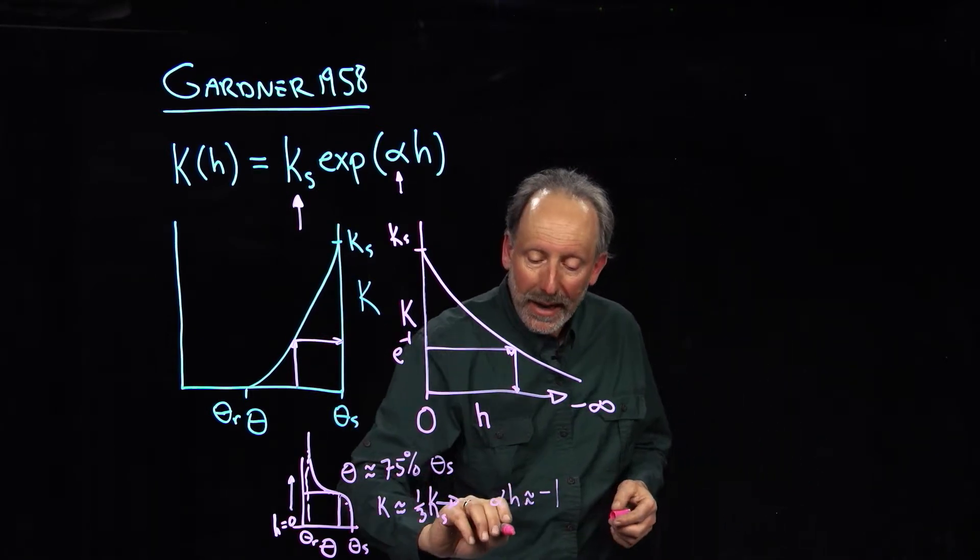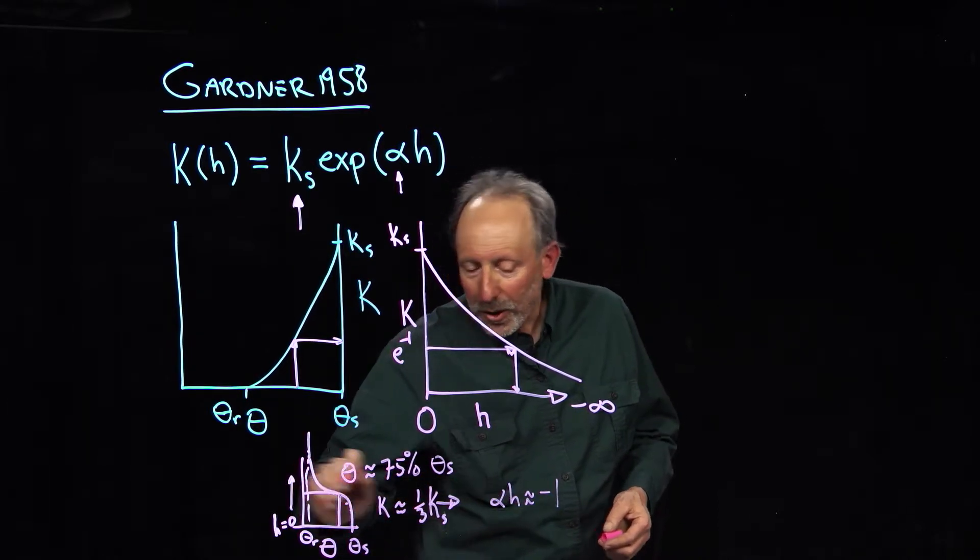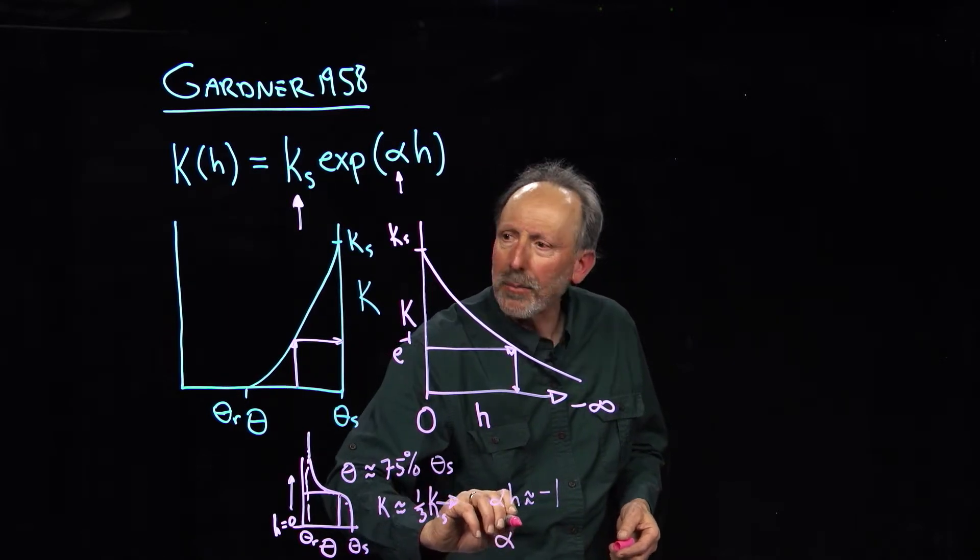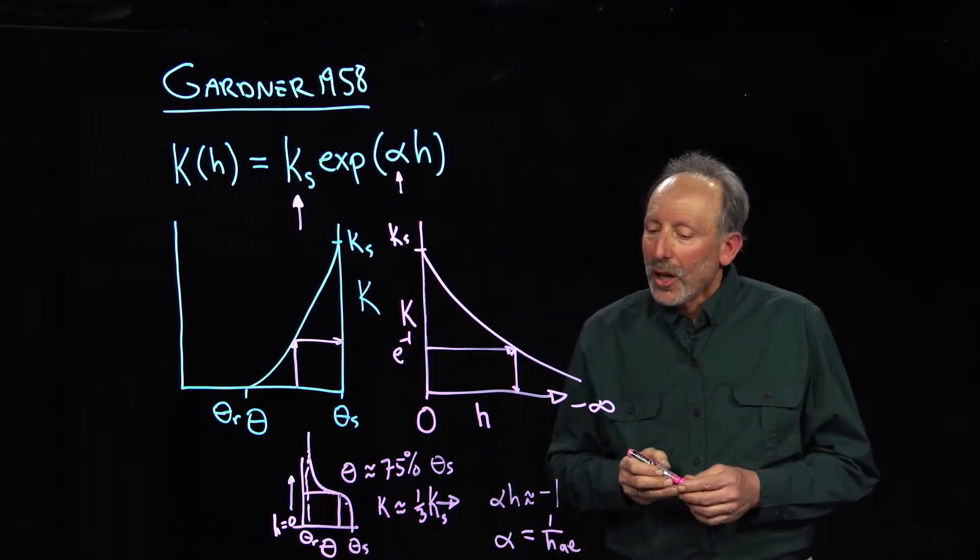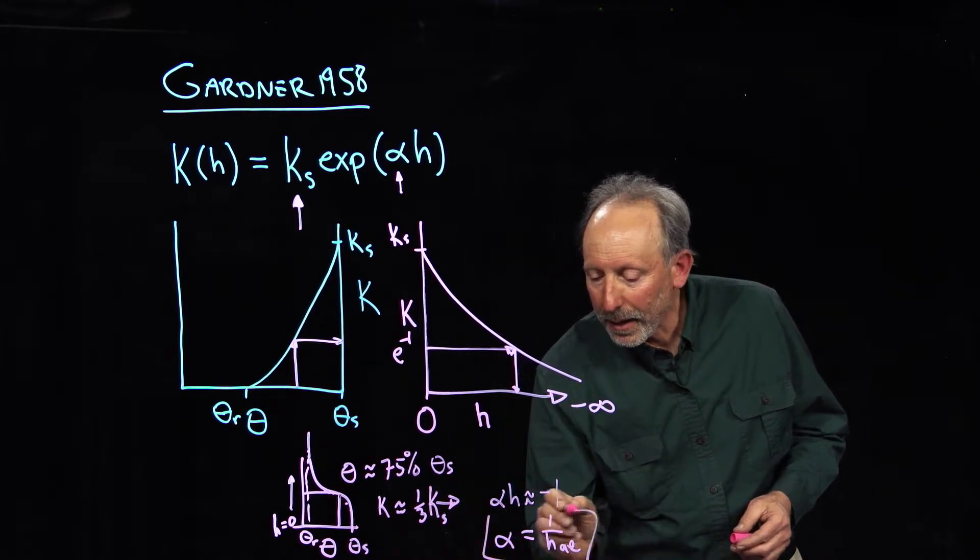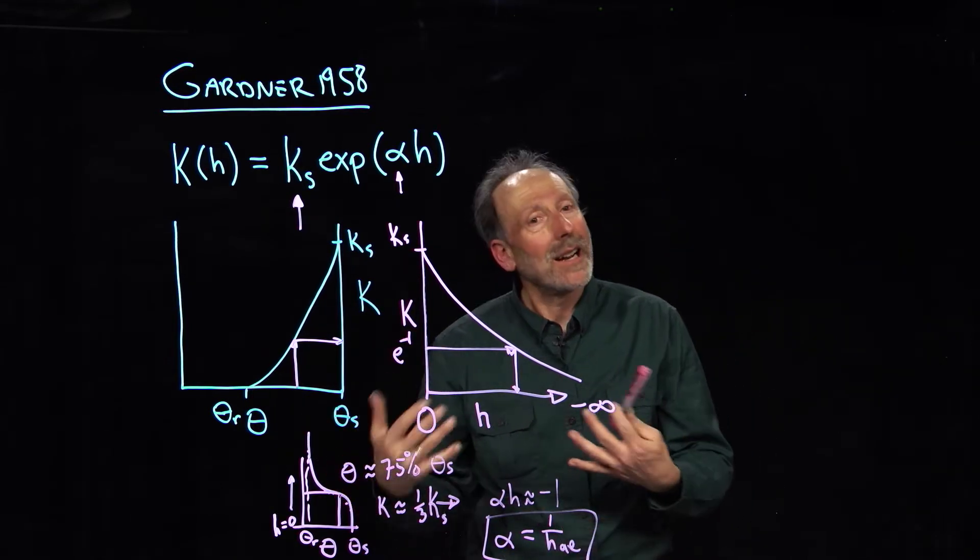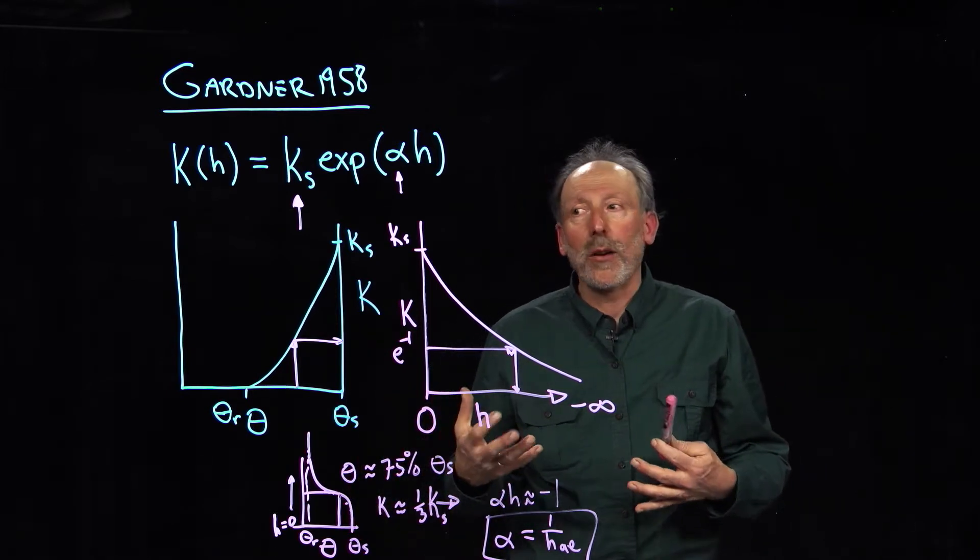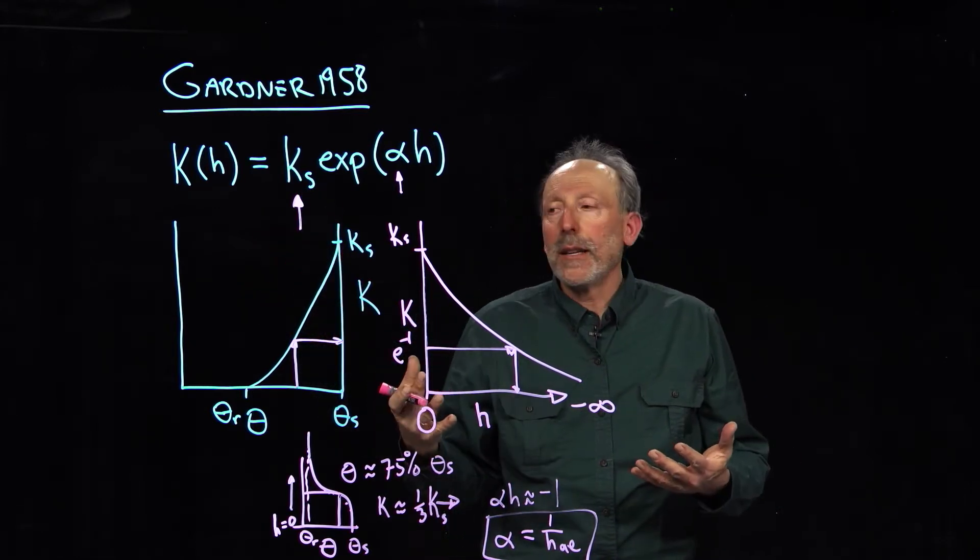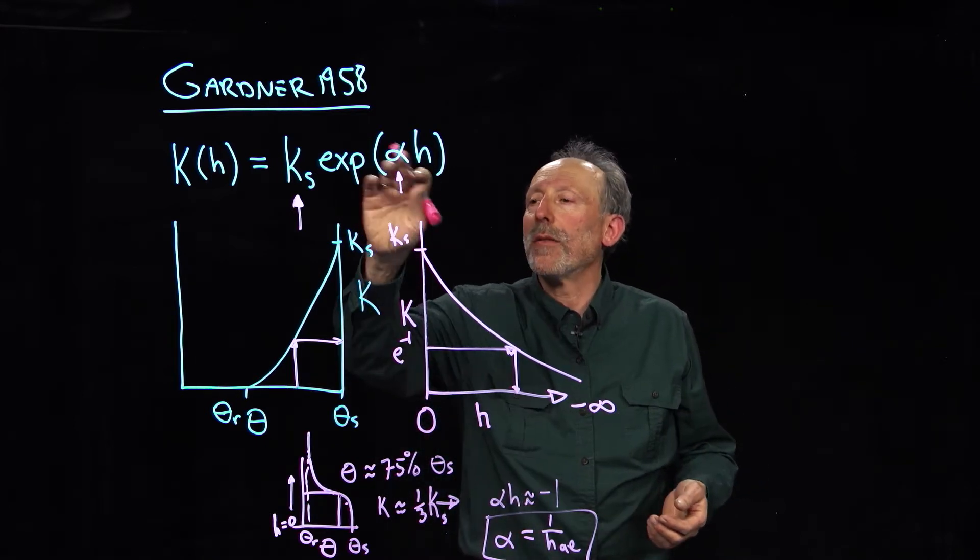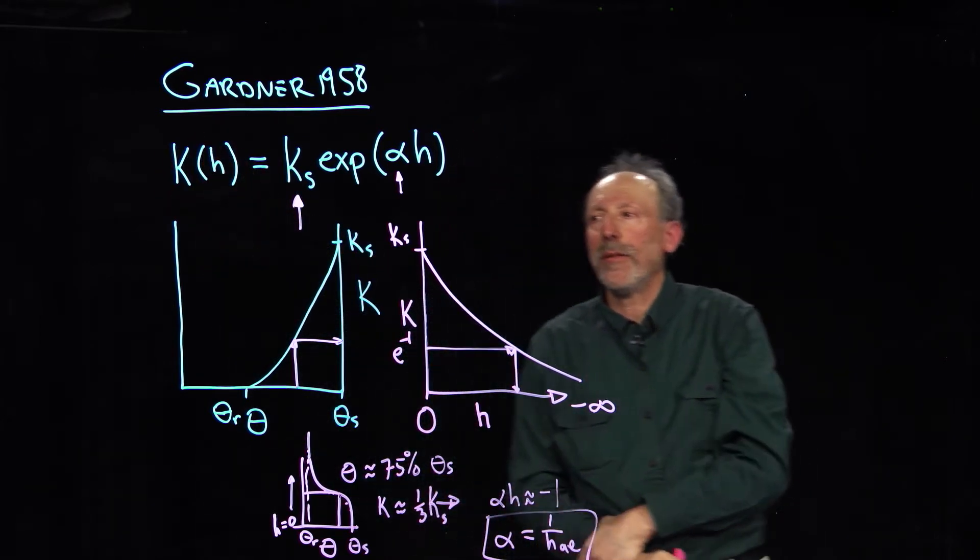So then we can say that alpha, we'll call that h, we'll just call that the air entry. So that's when the air starts to really enter the soil. So alpha is approximately equal to one over the air entry pressure. So now we can relate the value of the parameter alpha to a point off of the retention curve. And that's kind of satisfying, because we know that the retention curve really tells us a lot about when the conductivity should decrease. And so we're going to do a column experiment, as we did with the Van Genuchten expression, and we'll take this point, this value of alpha, right off of the water retention function. And in so doing, we get a very compact form of the conductivity function.